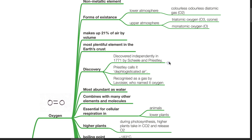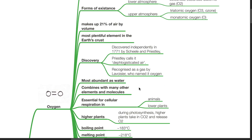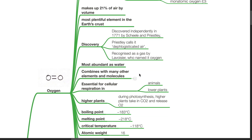Discovery: Oxygen was discovered independently in 1771 by Scheele and Priestley. Priestley called it the dephlogisticated air, and it was recognized as a gas by Lavoisier who named it oxygen. It is most abundant as water, combines with many other elements and molecules, and is essential for cellular respiration in animals and lower plants, and in higher plants during photosynthesis. Higher plants take in carbon dioxide and release oxygen.